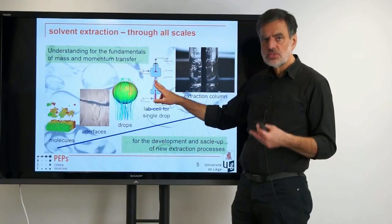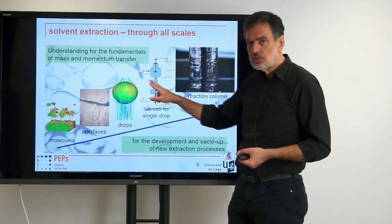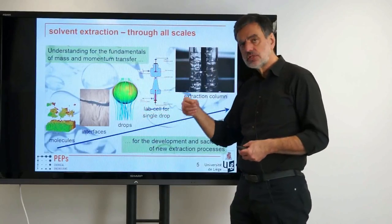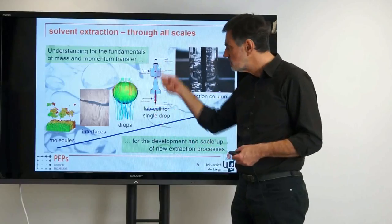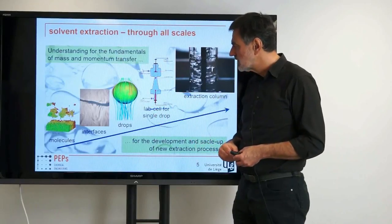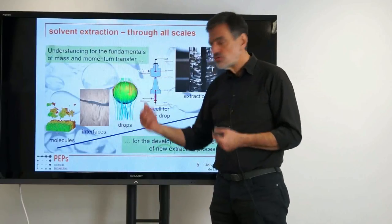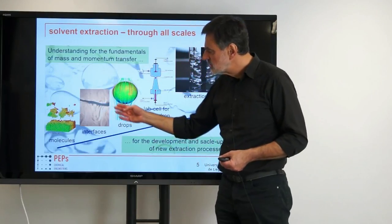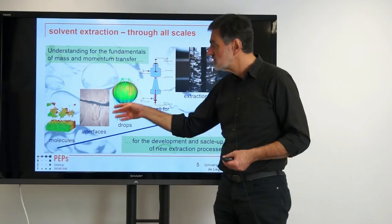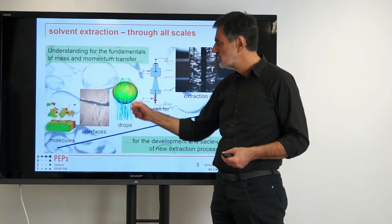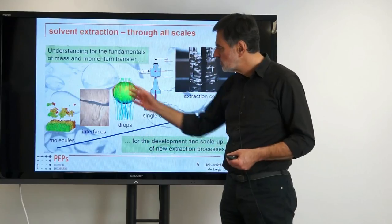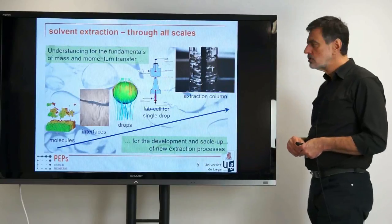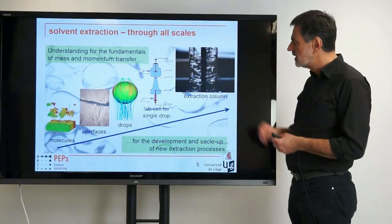We investigate how mass transfer, sedimentation, and things like that happen for the single drop. The models are taken from the lower scale so that the structure of the model is correct, and the parameters characterizing the specific material system are fitted to experiments on lab scale. The models are derived from investigations on molecular scale and especially at the interfaces, because that's actually where the action happens — where mass transfer is actually occurring across the interface. We then plug the models together to describe what's going on on a pilot plant scale extraction column or even a technical column.